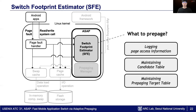From this list, ASAP generates two tables for each application: the candidate table and the pre-paging target table. The candidate table is a list of pages that are frequently accessed in the last switches. The pre-paging target table is a list of pages that are pre-paged by pre-paging threads. Using these tables, ASAP can achieve high coverage and low misprediction.